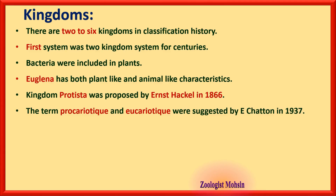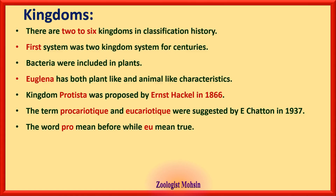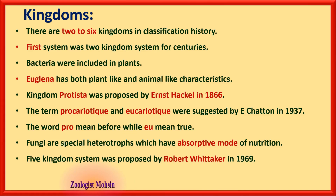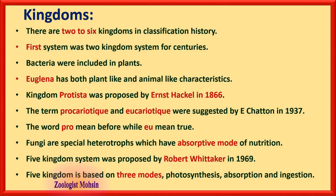The terms prokaryotic and eukaryotic were introduced by E. Chatton in 1937. The word 'pro' means before while 'eu' means true. Fungi are special heterotrophs with an absorptive mode of nutrition — they digest materials outside their bodies and absorb what they need. The five-kingdom system was proposed by Robert Whittaker in 1969 and is based on three modes: photosynthesis, absorption, and ingestion — that MCQ has already been asked.